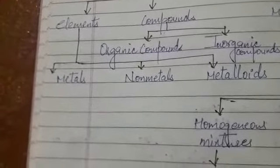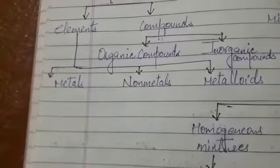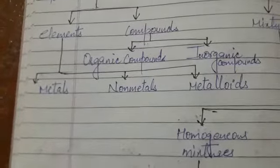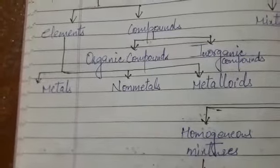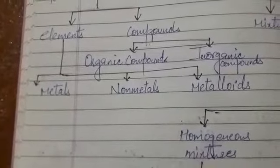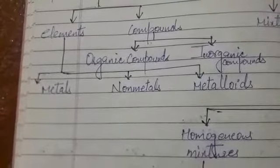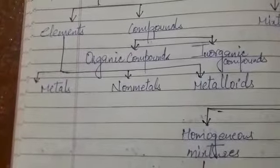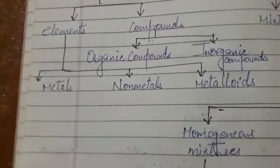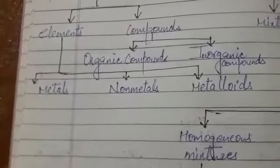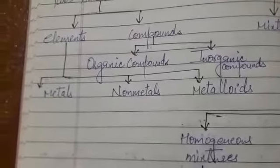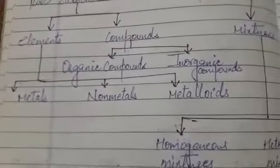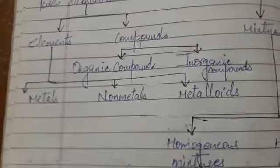Metals: An element that shows the properties of malleability, ductility, lustrous nature, high density, stiffness or hardness, mechanical strength, high melting and boiling point, sonority, and good conductor of electricity are considered as metal.